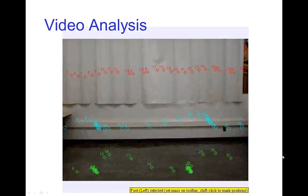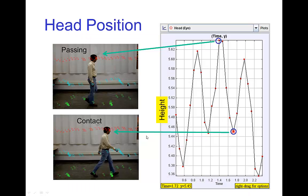This is done using free tracking software. Just looking at the position of the eye, which is easy to mark from frame to frame, we can see that there's a general up and down motion in the body, and this motion tends to put the head highest around the passing position and lowest at the contact pose.